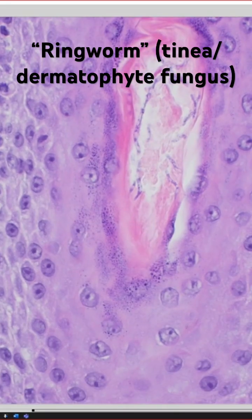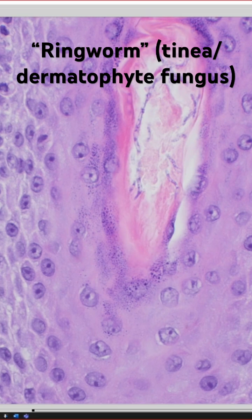In some cases they can go down and just involve the hair shaft, which we call — particularly in tinea capitis on the scalp — either endothrix or ectothrix pattern of infection. In those cases you may not have any organisms on the surface. So don't forget to check the hair follicles.